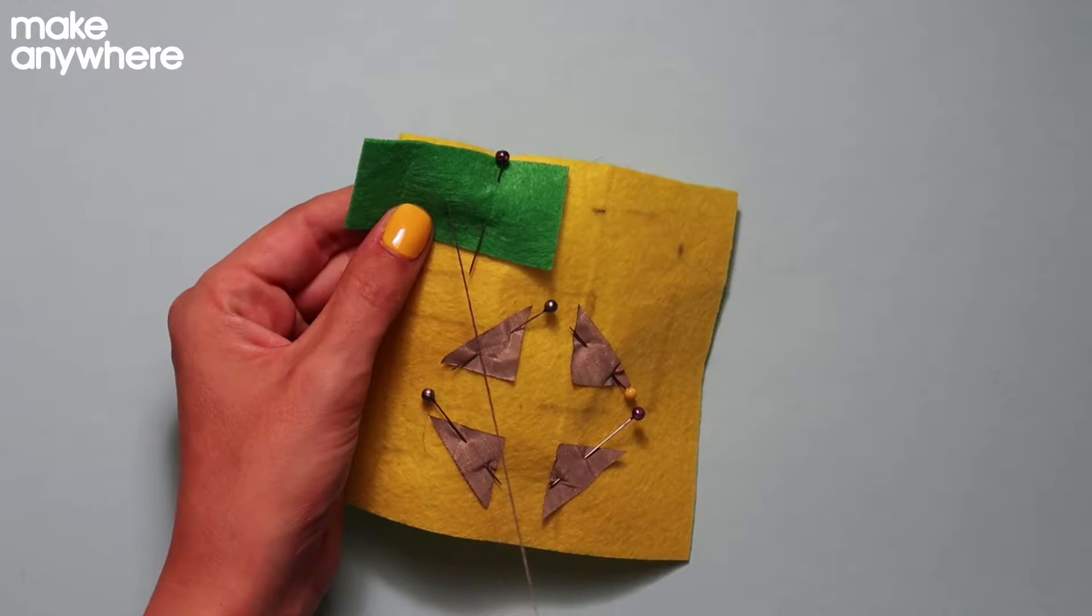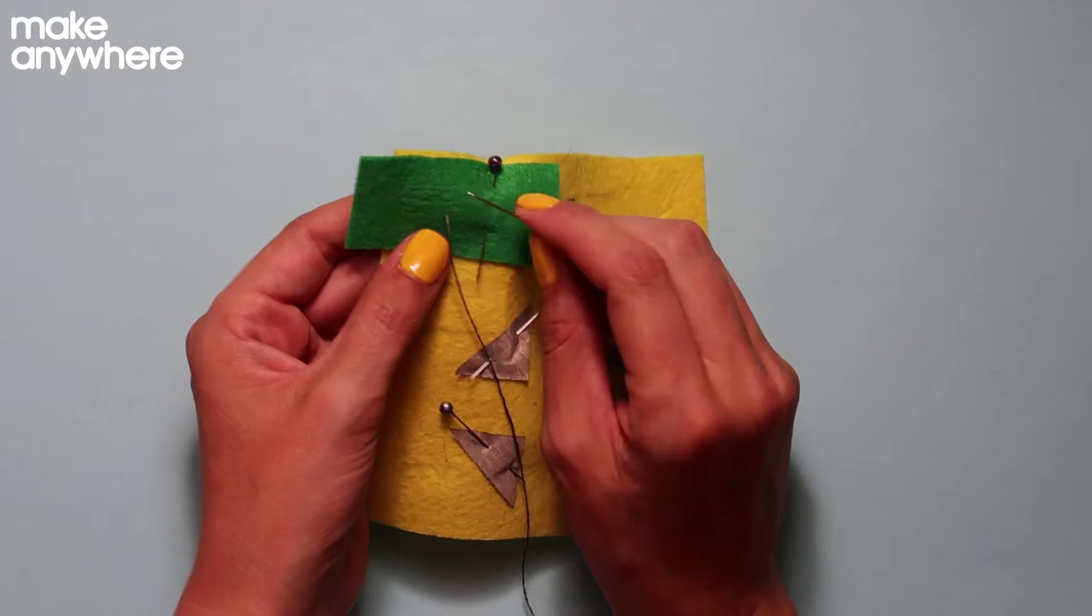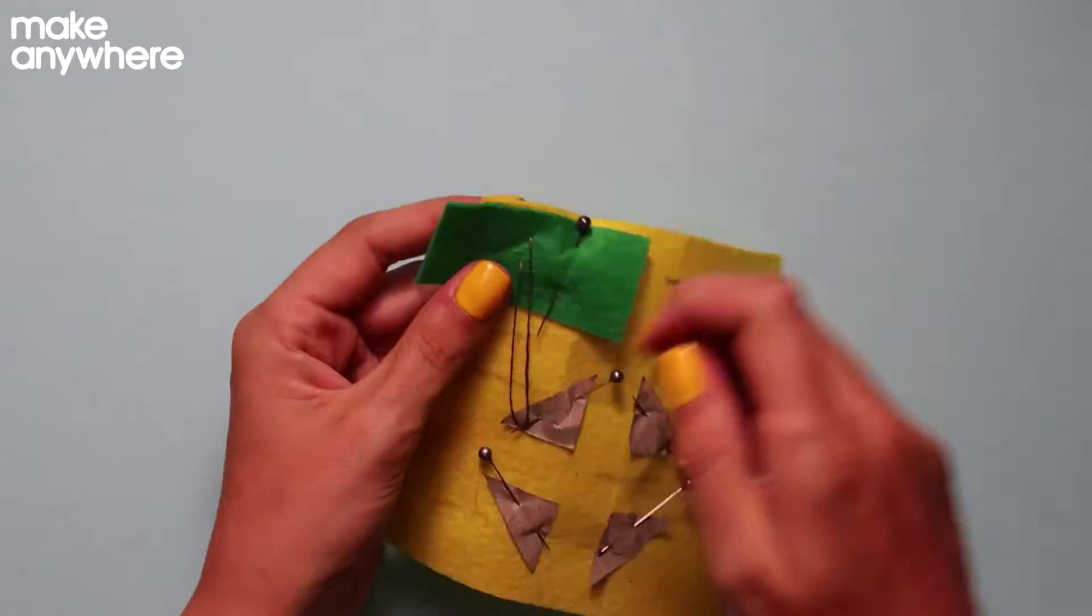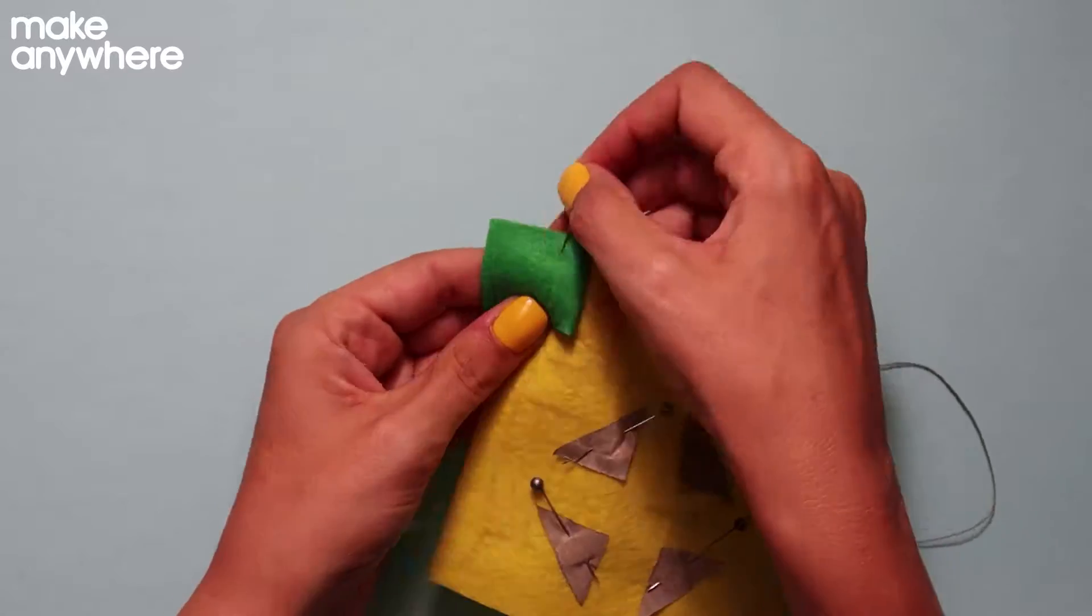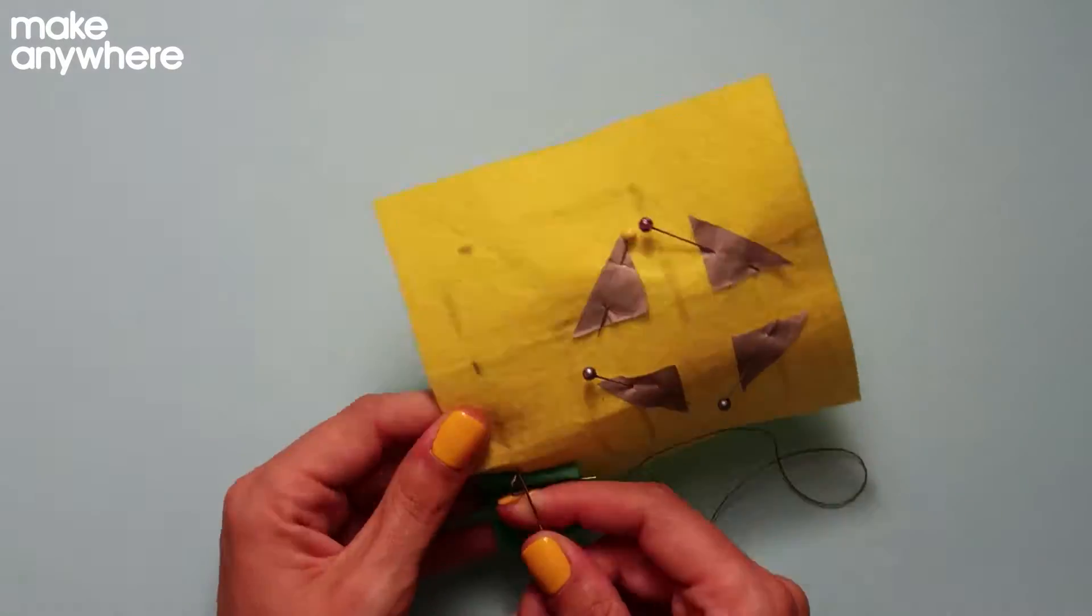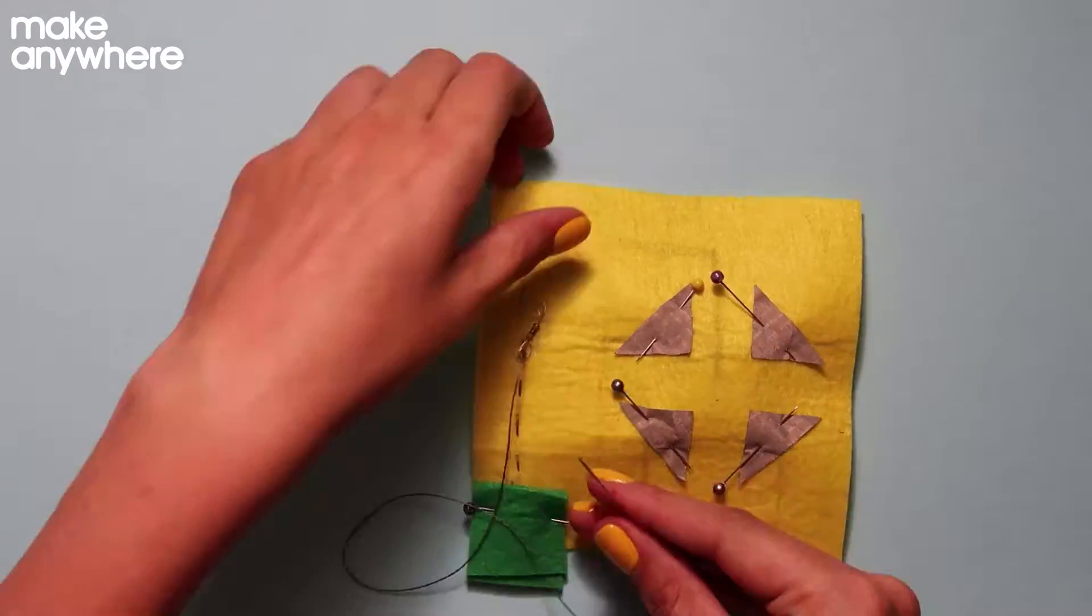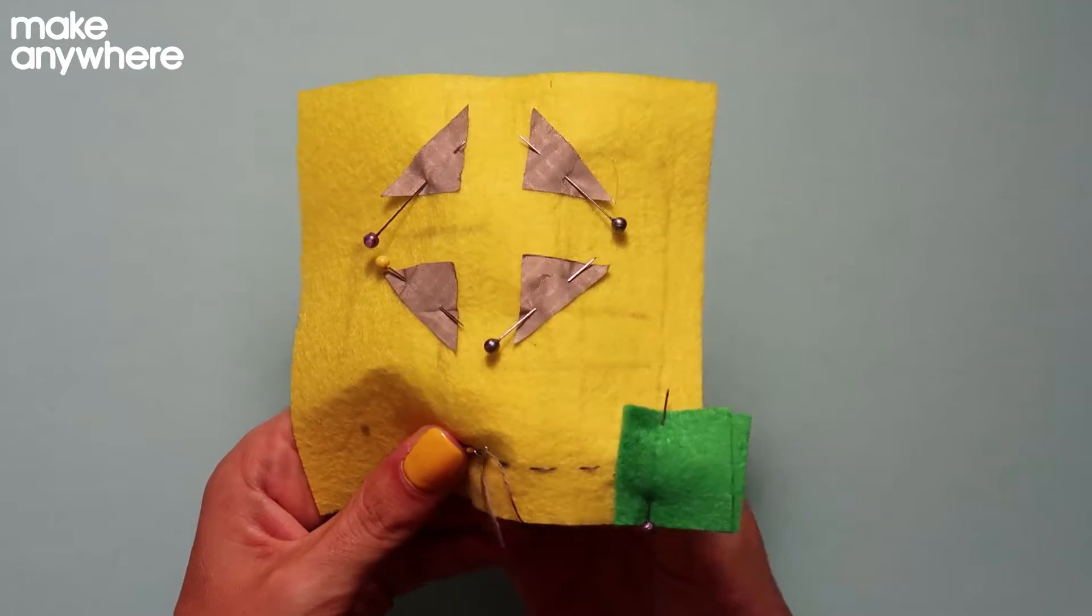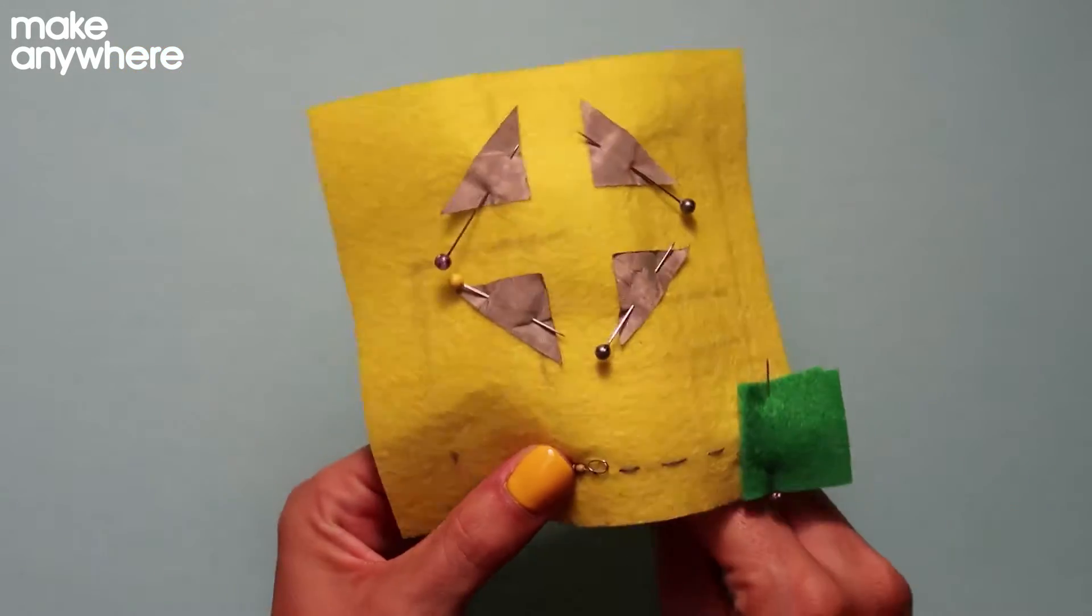So we're going to start from the battery holder. Do a nice cross so there's lots of conductive thread that can touch your battery. Fold that out of the way. And then go around the leg of your resistor three times. We need to make sure that it's a nice strong connection.